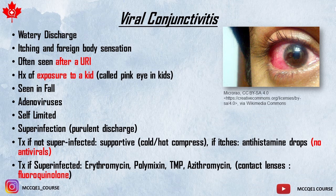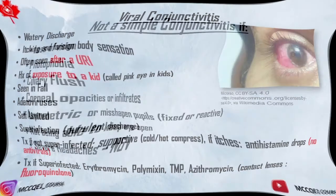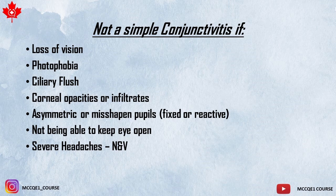Viral conjunctivitis is the same thing children call pink eye in school or kindergarten. When you see redness and swelling in the eye — either bilateral or unilateral — a gritty sensation and discharge, think of conjunctivitis in general, except when you see alarm symptoms: decreased visual acuity, photophobia, ciliary flush, a sensation of foreign bodies, corneal opacities and infiltrates, asymmetric or distorted pupils, trouble keeping the eye open, or severe headaches with nausea and vomiting. A simple conjunctivitis does not cause these things.